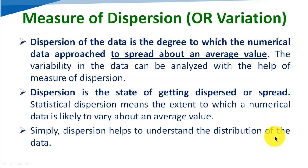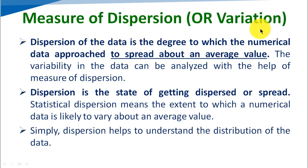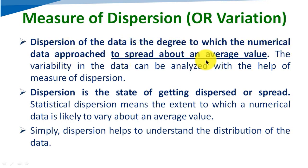So what is measure of dispersion? It is also known as variation. We will discuss two terminology here: dispersion and variation. Dispersion of the data is the degree to which the numerical data tends to spread about an average value.